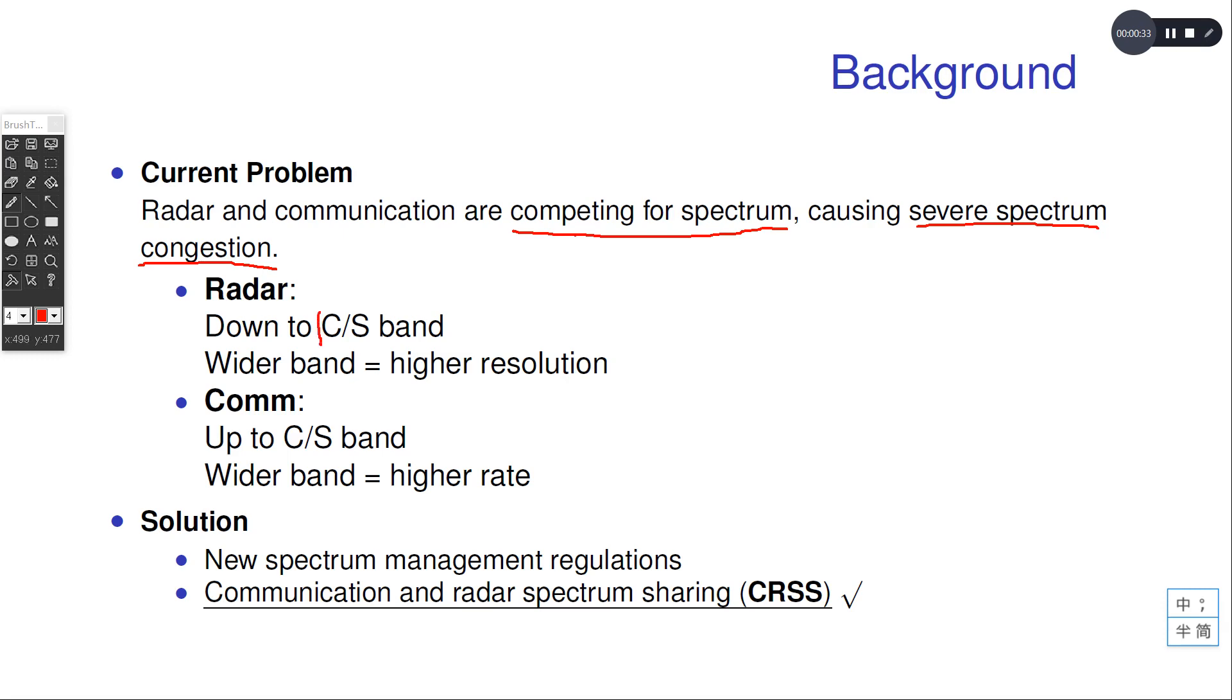To be specific, the radar systems work from the higher bands down to the C and S bands using the wider band signal to achieve higher resolution. The communication systems also work from the lower band up to the C and S band.